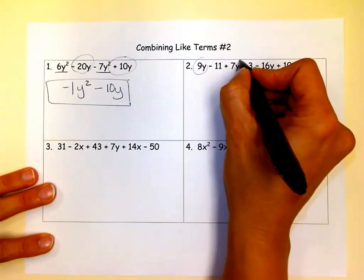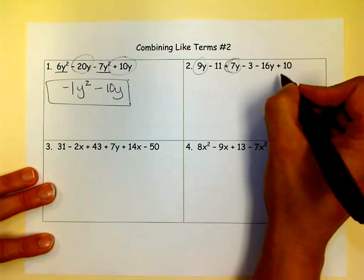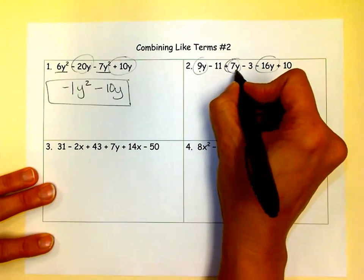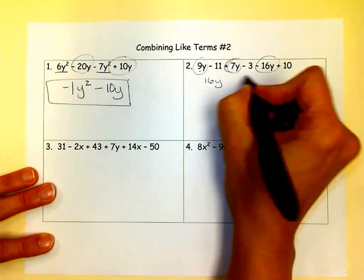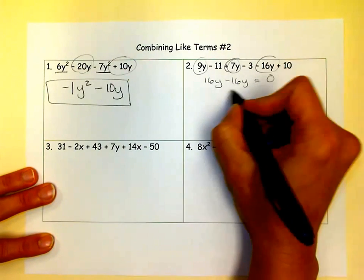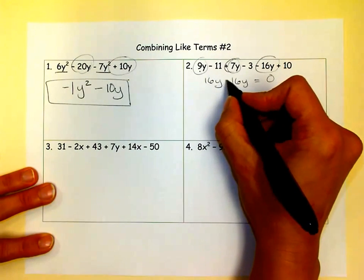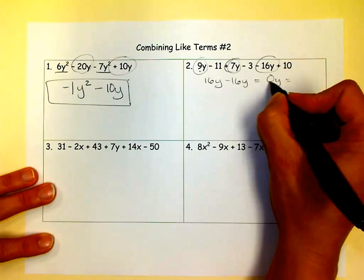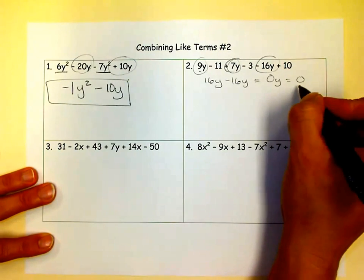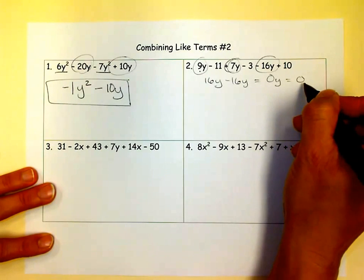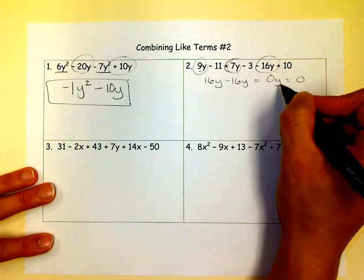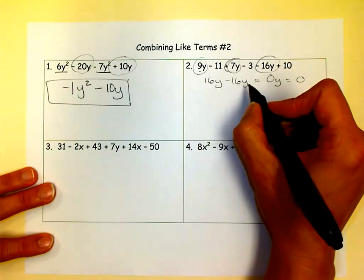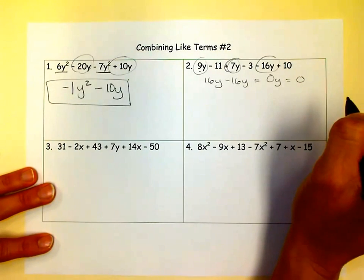Over here, we can combine Ys. So we'll circle. Make sure you get the sign in there. We'll circle all the Ys. 9Y plus 7Y is 16Y. And then I have a minus 16Y, which gets me 0. Because if I have 16 apples and I minus 16 apples, I just have 0 apples. And you could say 0Y, but 0 times Y is just 0. So keep in mind that when things cancel out, you get a 0. You don't get 0Ys or just 1Y. Some people think you get 1Y. When you have 16 of something and you subtract the same amount of something, you have 0 things.